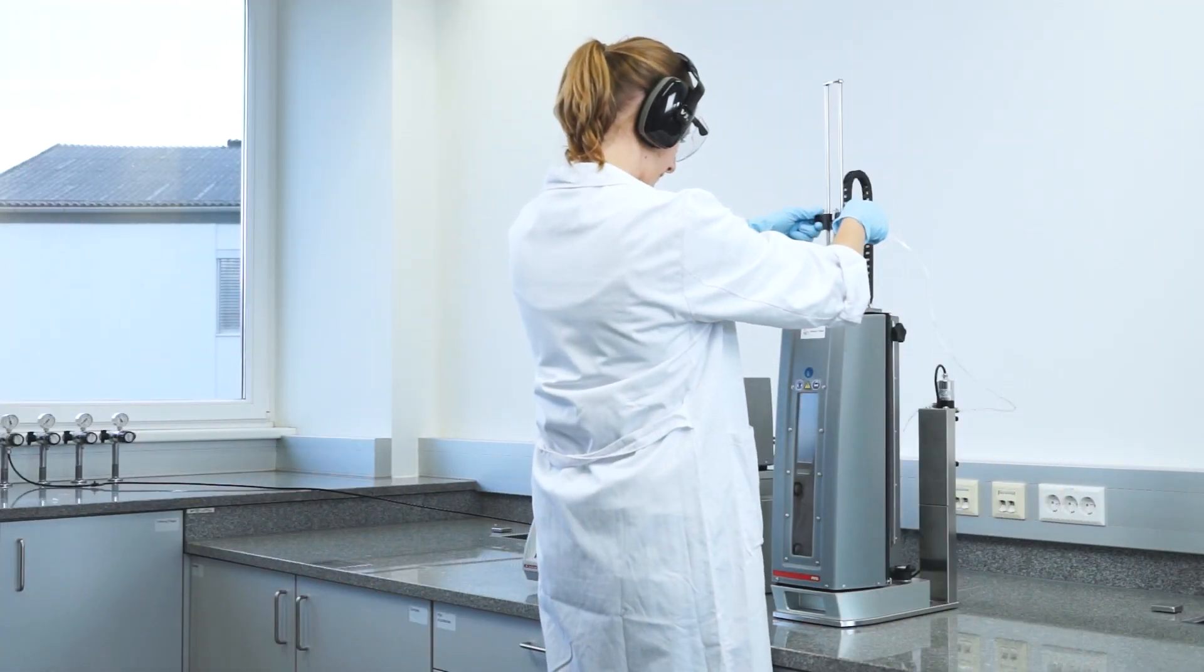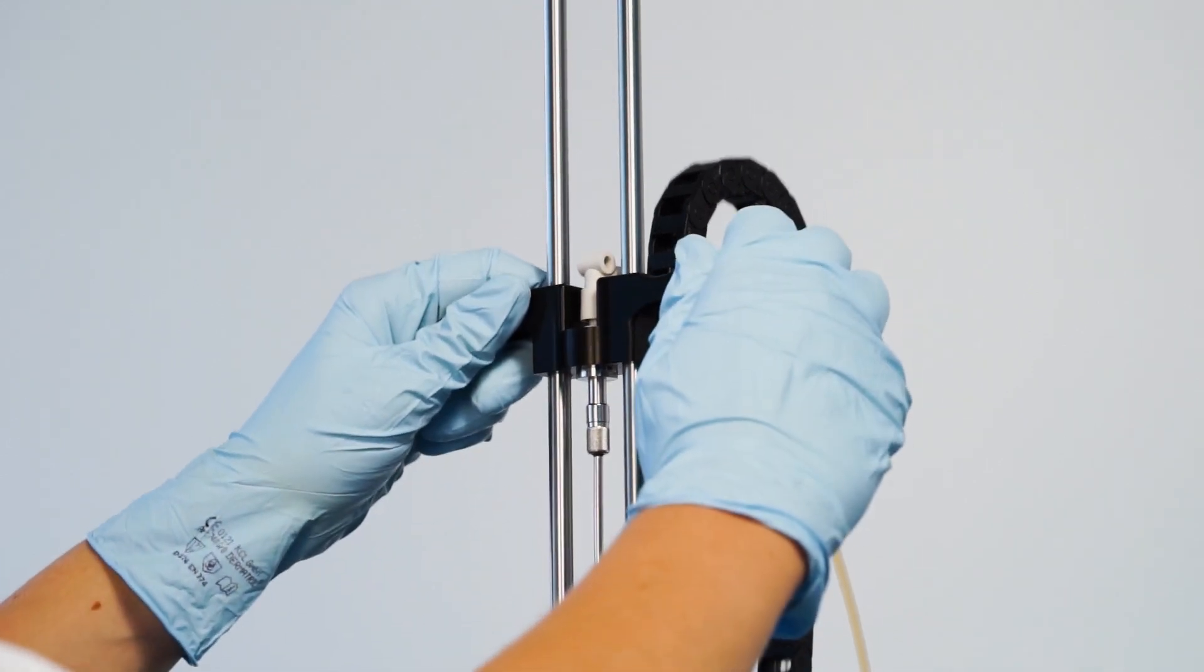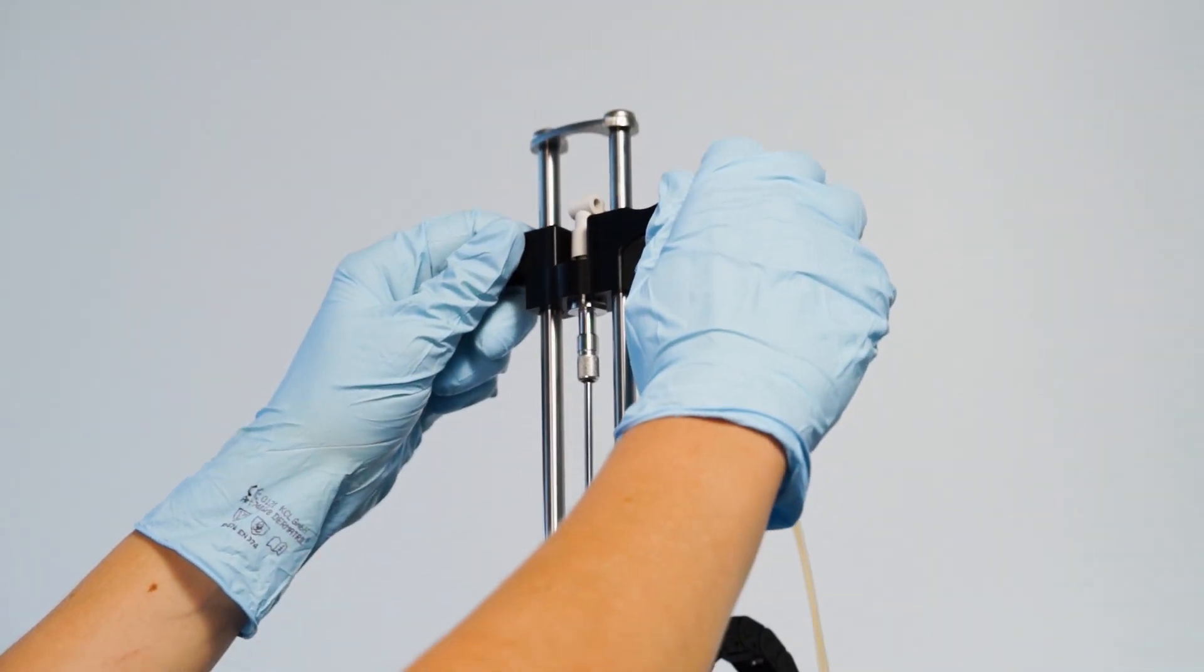To remove the container after your measurement is done, raise the filling tube, release the pressure, and open the safety shield.